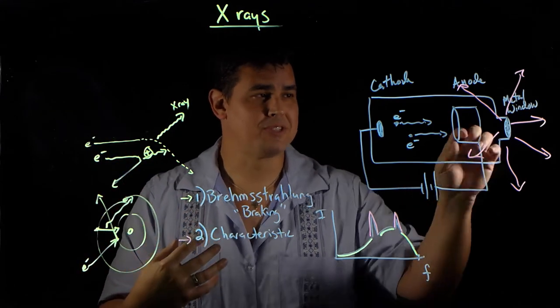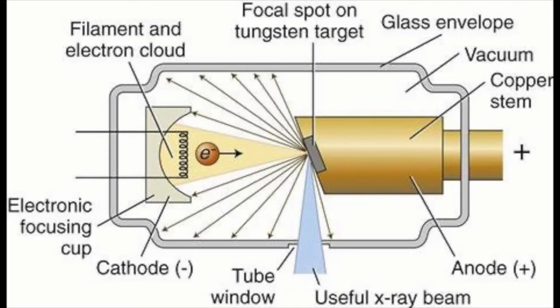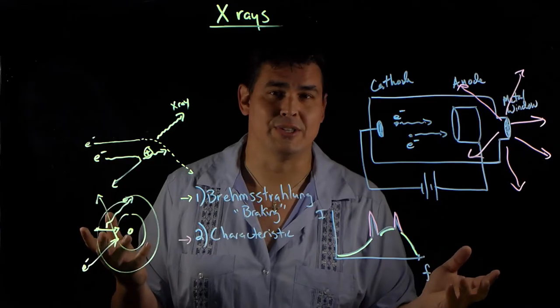So nowadays what they do with x-ray tubes, instead of letting these x-rays fly everywhere, they take the tube and encase it in lead and they have an opening so that x-rays will only come out the bottom so you can direct the x-rays, so people aren't just getting exposed to x-rays all over the place.